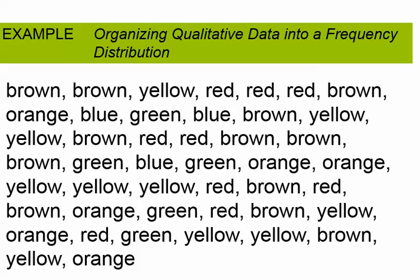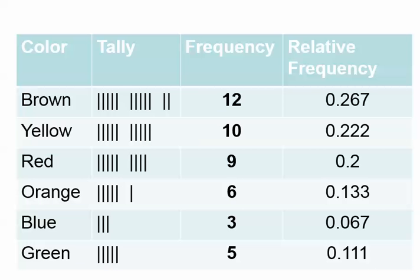In this video I'm going to use StatCrunch to create a bar graph, a Pareto chart, and a pie chart using this data set. This is a bag of M&Ms — there are 45 M&Ms listed here. If we build a frequency table out of this, here are the frequencies and the relative frequencies. We're going to put that data into StatCrunch.